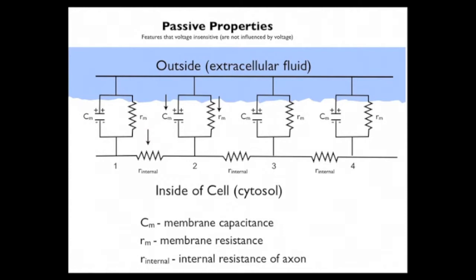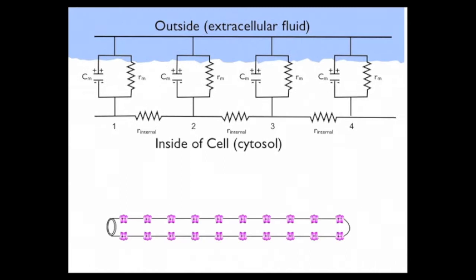The third thing is the R internal, which stands for the internal resistance of the axon. I'm going to explain this using an illustration of an axon shown in the lower part of the figure. I've put in a bunch of channels, they happen to be purple potassium channels, but the kind of channel doesn't really matter at all.